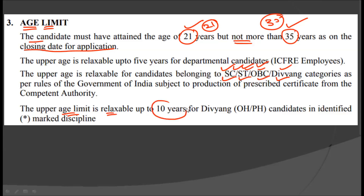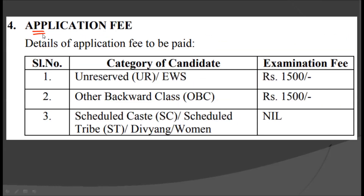The upper age limit is relaxable up to 10 years for Divyang candidates in identified marked disciplines. That is, Divyang category people can have 10 years of relaxation in the upper age limit. Regarding application fees: if you belong to the unreserved category, you have to pay 1,500 rupees. If you belong to Other Backward Classes, the same fee of 1,500 rupees applies. If you belong to Scheduled Caste (SC), Scheduled Tribe (ST), Divyang, or if you are a woman, you don't have to pay any fees — it is completely free.